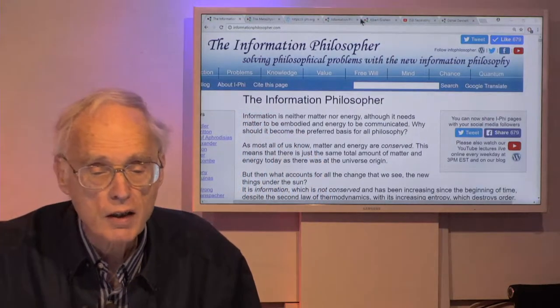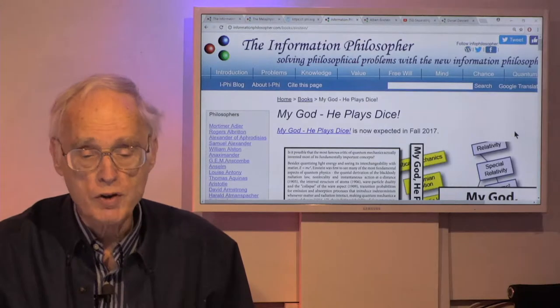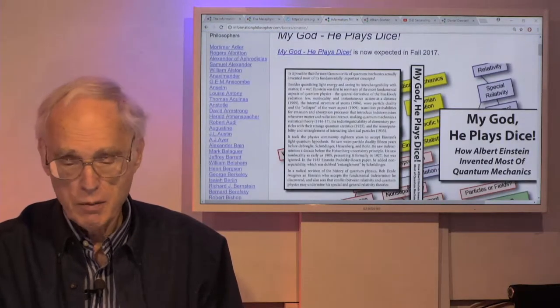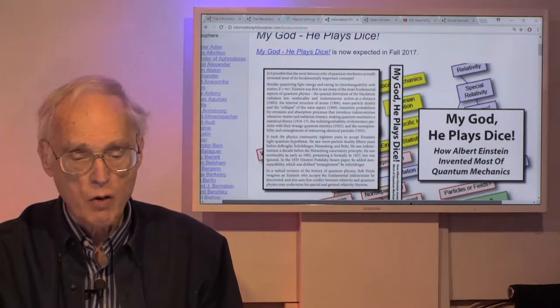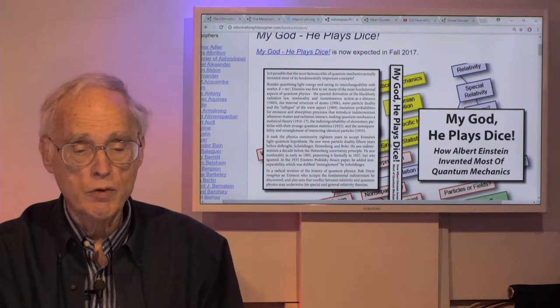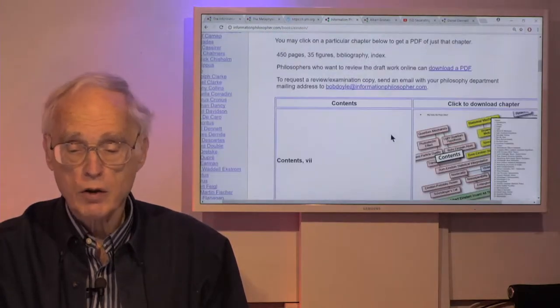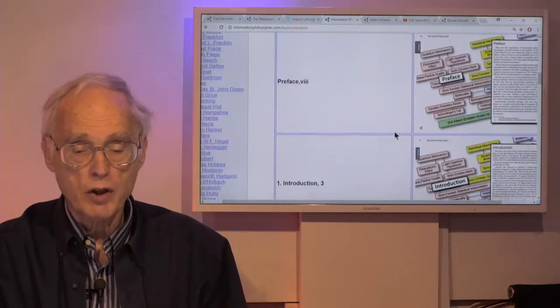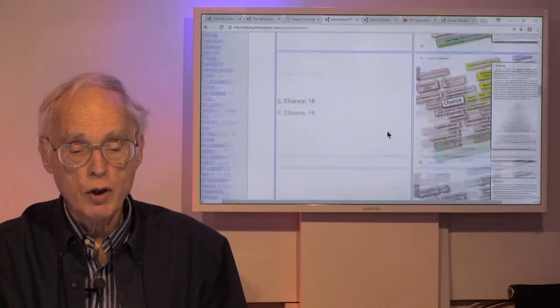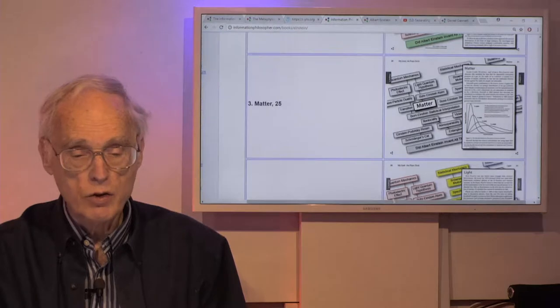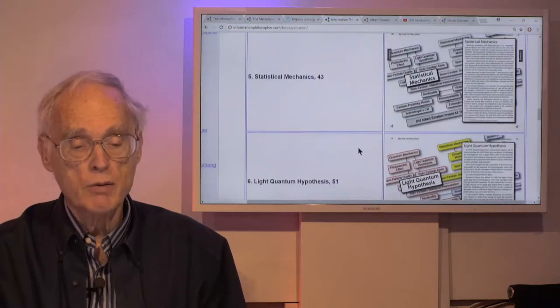Here is that book, a draft version of it. And once again, I always remind you that although I am producing print books with my work in it, I don't want there to be an expense for professors who are recommending my books in classes. So I've taken all the individual chapters in the book and put it on my website. Here's the book, for example, on Einstein. My God, he plays dice. How Albert Einstein invented most of quantum mechanics.